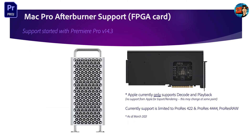On the Mac side, Premiere Pro added Afterburner support starting with version 14.3. As of today, the Afterburner card only supports decode and playback for ProRes files — specifically ProRes 422 and ProRes 4444 — inside Premiere Pro and After Effects. ProRes RAW is not yet supported by the Afterburner card, but ProRes RAW is GPU accelerated and delivers excellent performance.